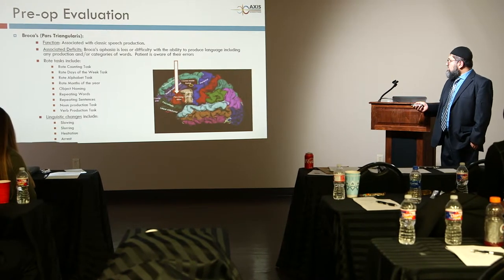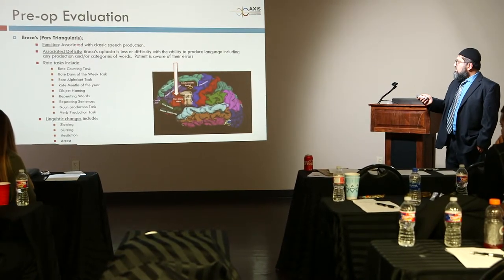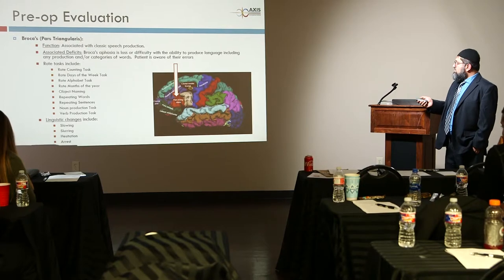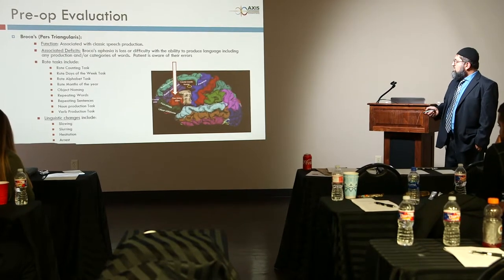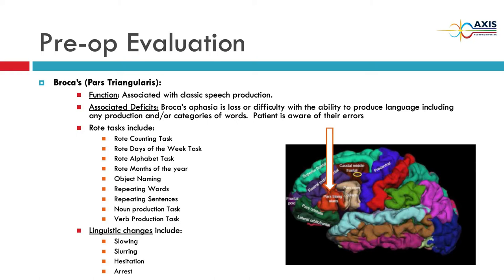The second sub-area, pars triangularis, is associated with classic speech production. A deficit there causes aphasia or difficulty with production and categorization of words. We use the same tests: object naming, counting, days of the week.